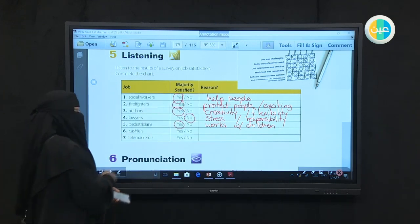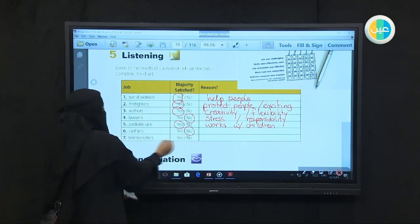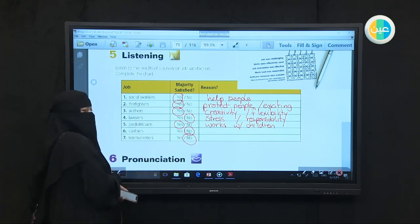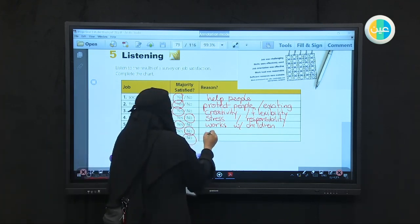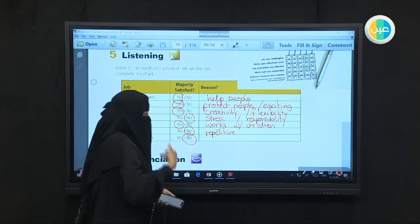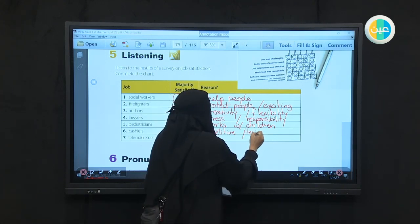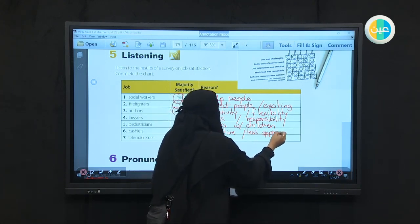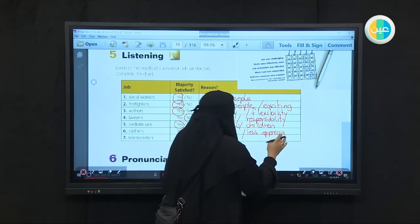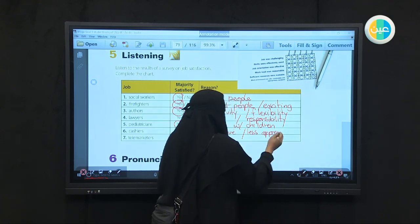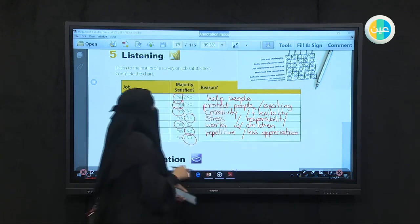Number six. Cashiers. Now cashiers were not happy and telemarketers نفس الشي. التسويق اللي بالتلفون. Why? Because it is repetitive. Repetitive. في تكرار. مستمر. لنفس الشي. يسوو يسوو بستمرار. And nobody appreciates. Alright. Less appreciation. ما في تقدير. Appreciation from people. from people who work with them.